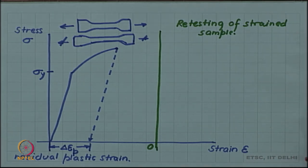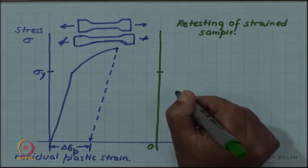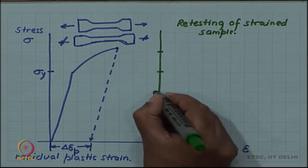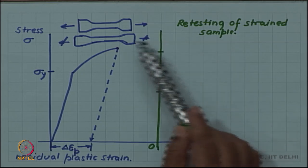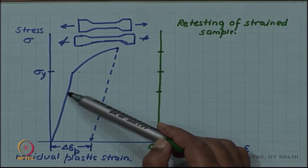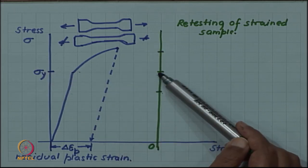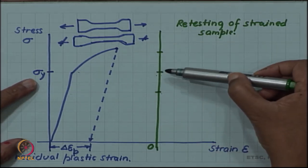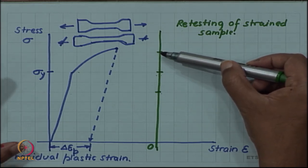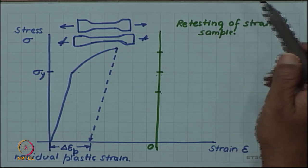What we will find, in particular in terms of the yield stress — will it show the same yield stress sigma y, or will the yield stress be higher, or will it be lower? In a retest, is the deformed specimen weaker than the original specimen? Will it show a lower yield stress, or does yield stress remain the same, or has the material actually become stronger after deformation?